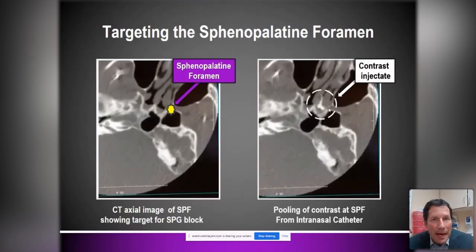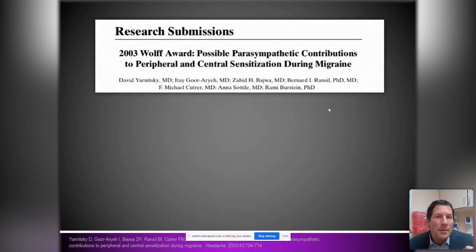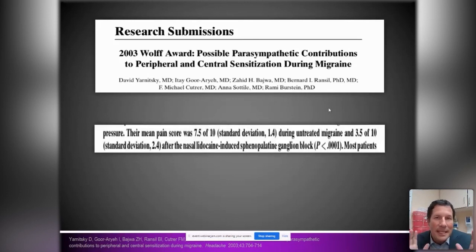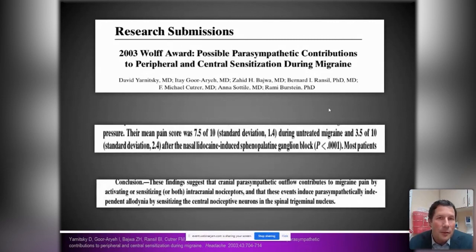Does it actually help people? A 2003 article published through the American Headache Society showed a statistically significant improvement in pain reporting for SPG blocks in migraine. The authors also recorded temperature and found that not only did pain drop down statistically, but the cheek warmed up — evidence of affecting the autonomic nervous system. Their conclusion: SPG blocks are effective in turning off migraine attacks because they work on both pain and autonomic nervous system functioning.